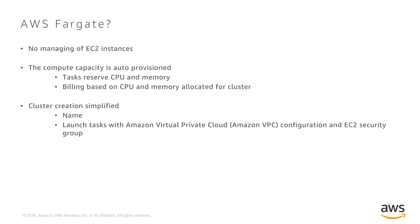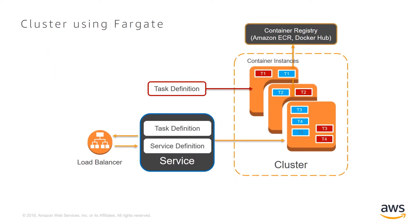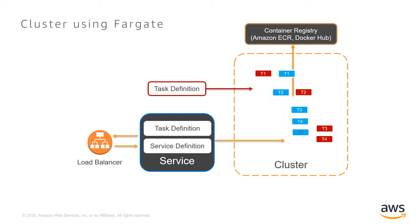AWS Fargate is a new technology for ECS that you can use to deploy your containers. With Fargate, you don't have to manage any EC2 instances, and the compute capacity will be auto-provisioned at launch time. You reserve the amount of CPU and memory needed for your container and Fargate takes care of the rest. The cluster creation is simplified — all you need to do is specify a name for the cluster and provide the VPC configuration and EC2 security groups. With Fargate, the container instances disappear and are no longer our concern.